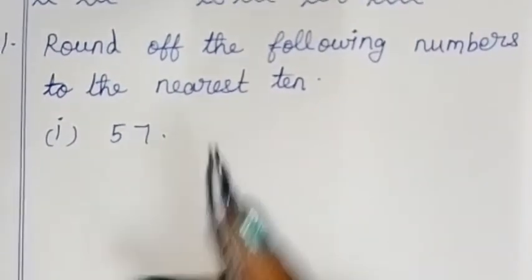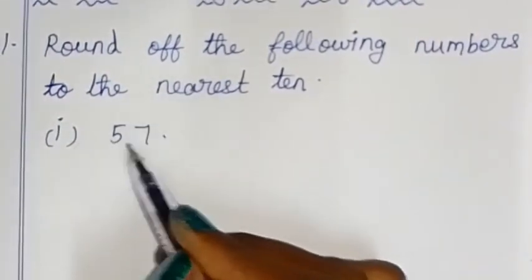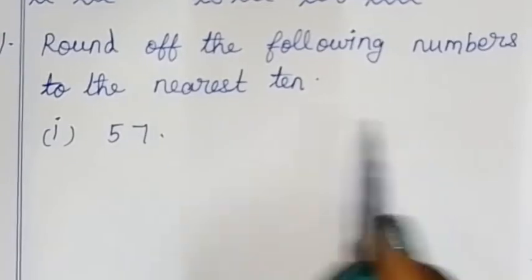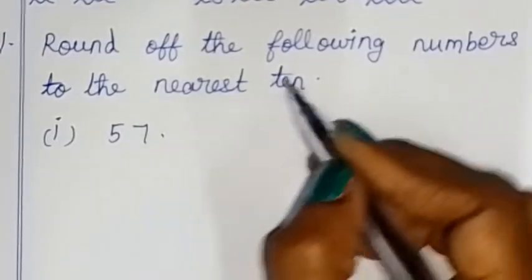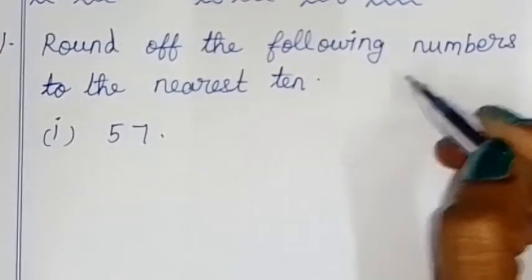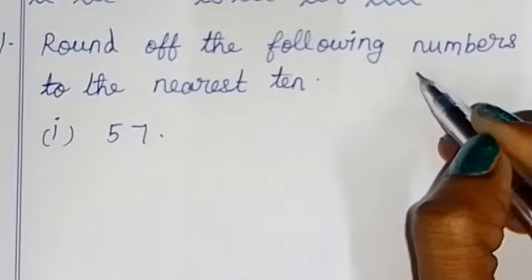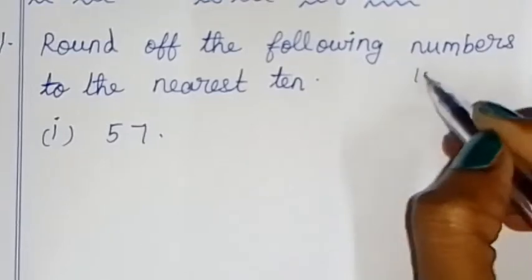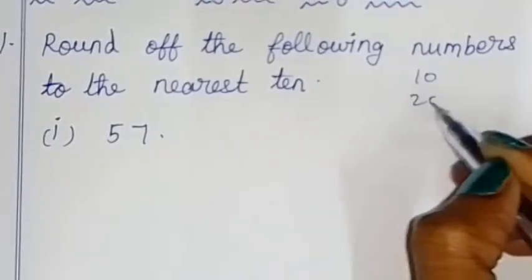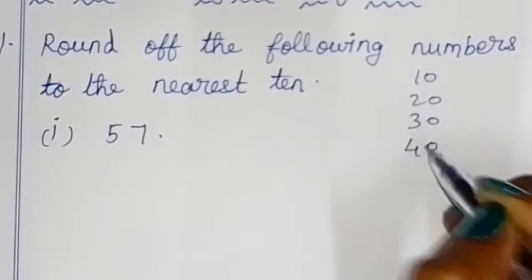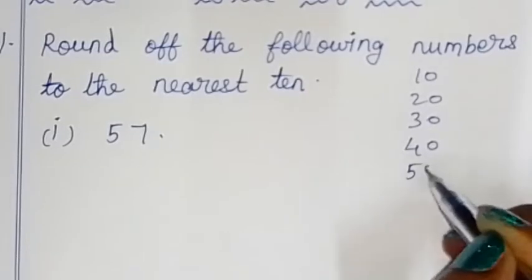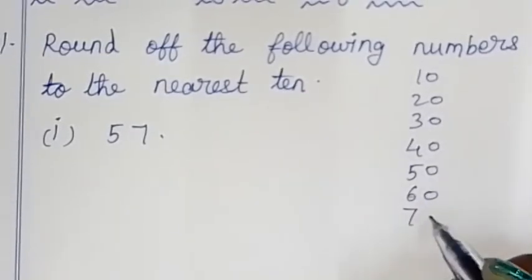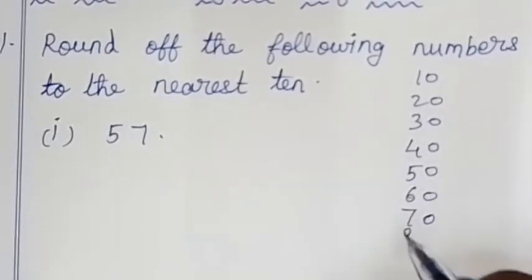First, 57 — this is the nearest to 10. How many numbers round off? The multiples of 10 are: 10, 20, 30, 40 — this is the nearest 10 form — then 50, 60, 70, 80, 90.